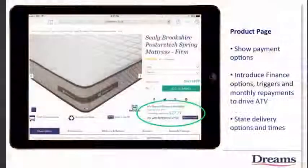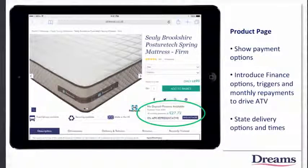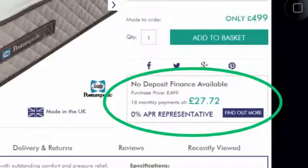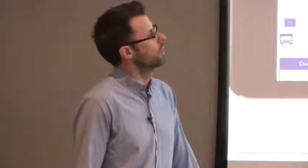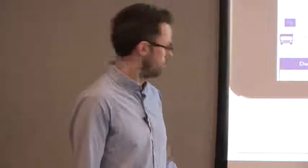Moving on to a product page here in the desktop view, we're using payment options here. So just getting customers used to the fact that we actually offer a finance solution. It's interest-free, very appealing, obviously great for our average transaction value. So here, why not start introducing the fact that a product that perhaps might be slightly more high-end is actually very affordable when spread over finance. Start introducing these kind of triggers here earlier on in the journey. Obviously also stating delivery options and times, just getting customers warm to the idea that it's going to be an easy transaction.